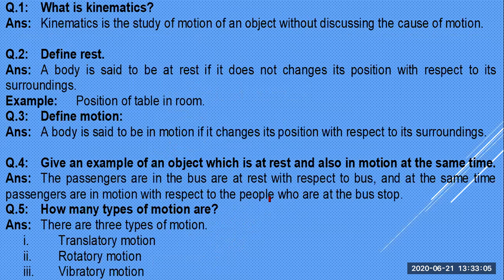Key definitions review: Kinematics is the study of motion of an object without discussing the causes of motion — force is neglected. In dynamics, we study forces. Rest: a body is in the state of rest if it does not change its position with respect to its surroundings. A table in a room is an example.